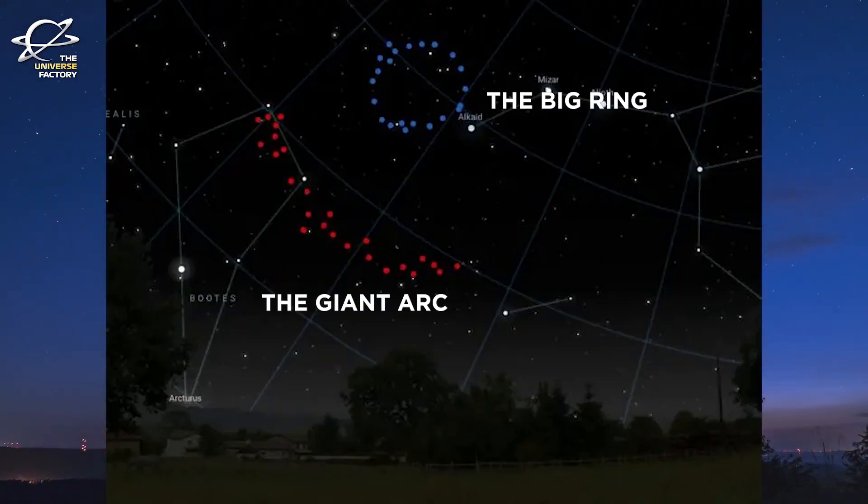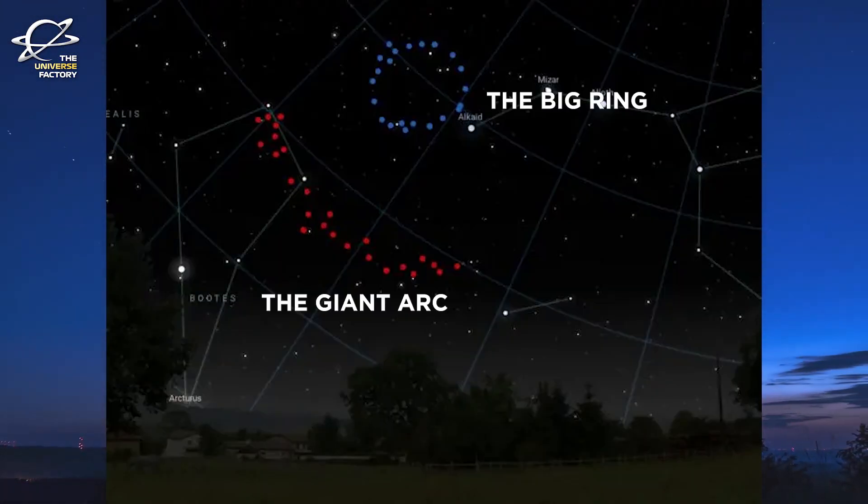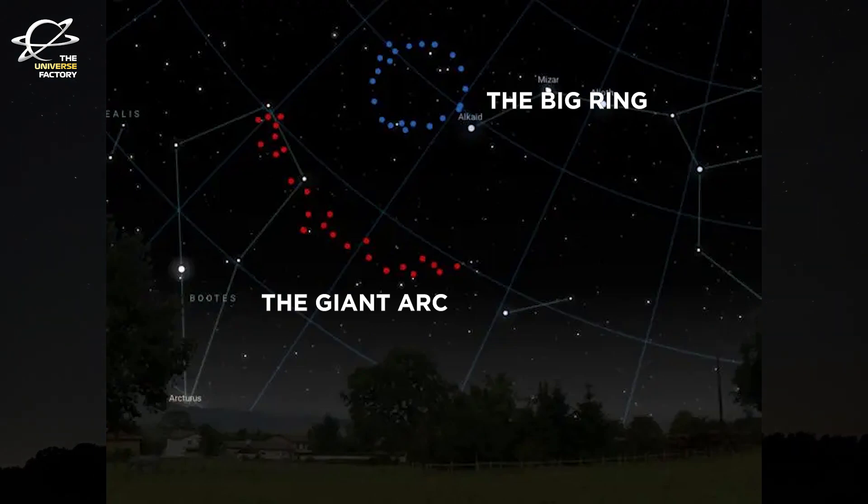Strangely enough, both these superclusters, the Big Ring and the Giant Arc, are almost cosmic neighbors and are only about 12 degrees apart from each other.